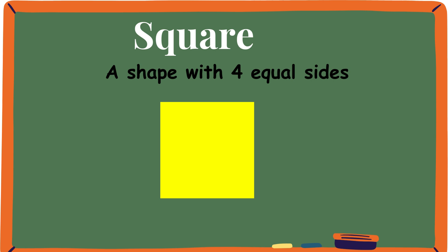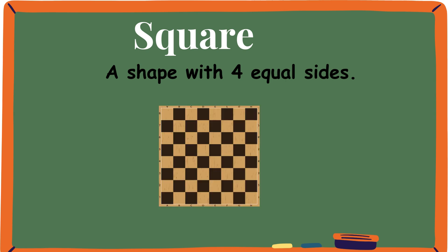Square. A square is a shape which has four equal sides. A chess board is just like a square, with four equal sides.